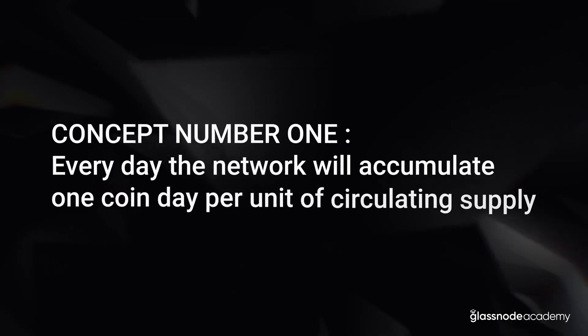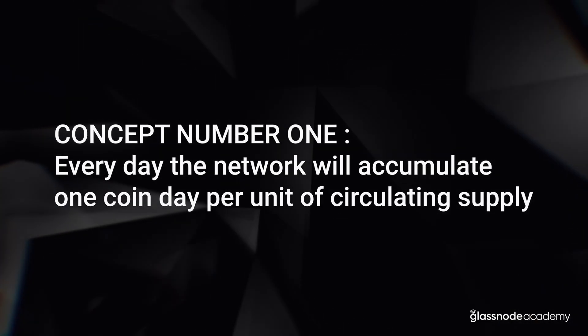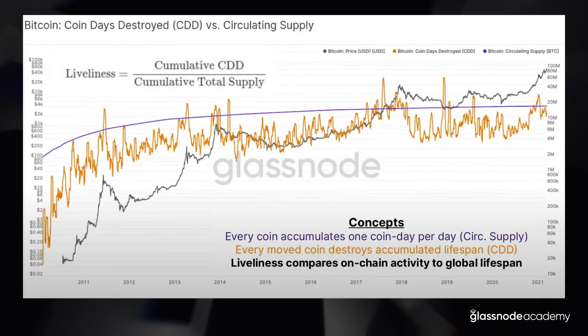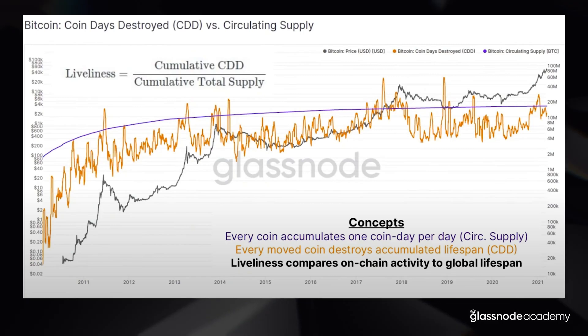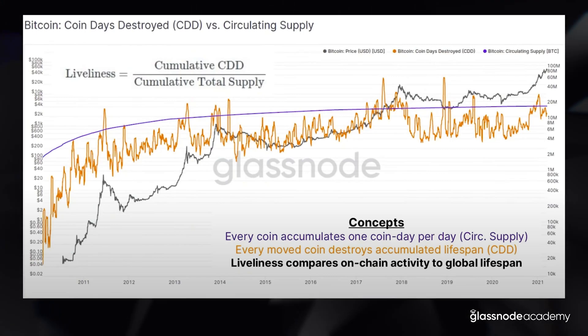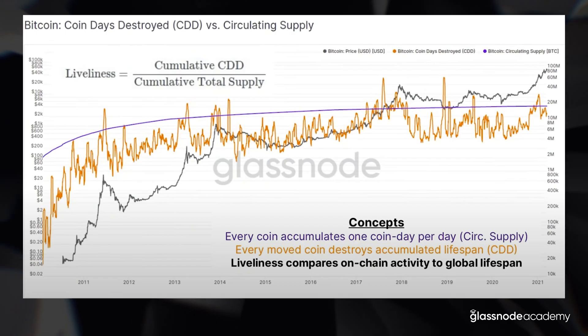To understand liveliness, we have to digest two different concepts. The first is that each coin that's been issued — the circulating supply — will accumulate one coin day per day. That's the purple line. So overall, every single day the Bitcoin network will accumulate a number of coin days equal to the circulating supply.